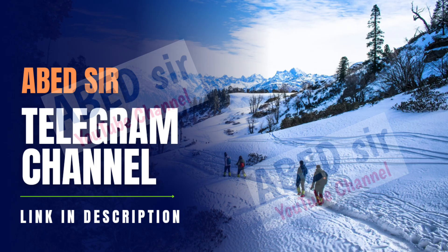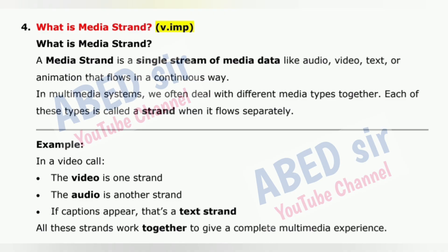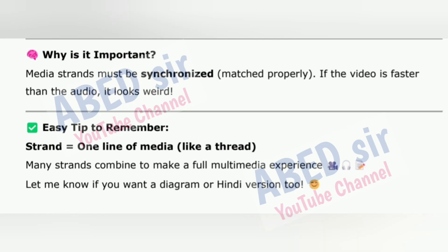Next important short question 4: What is media strand? A media strand is a single stream of media data — like audio, video, text, or animation — that flows in a continuous way. In a video call, the video is one strand, the audio is another strand, and captions appear as a text strand. All these strands work together for a complete multimedia experience. Media strands must be synchronized — if the video is faster than the audio, it looks weird. Easy tip: A strand equals one line of media, like a thread. Many strands combine to make a full multimedia experience.